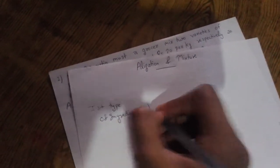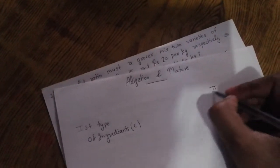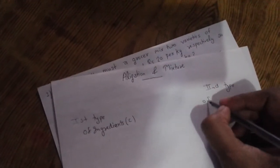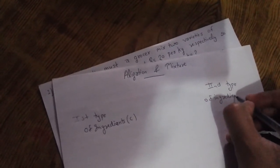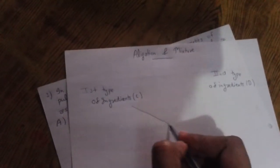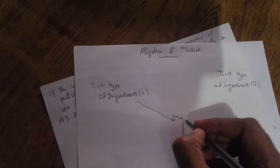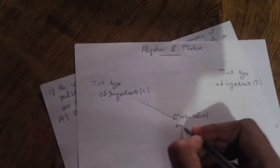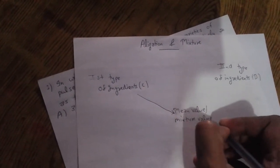First type of ingredients, that is cheaper value, and as usual second type of ingredients, that is dearer value. And in the middle we take mean value, that is also known as mixture value and average value.